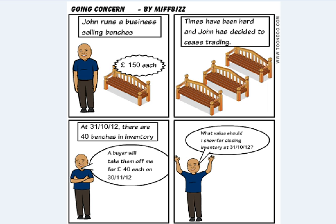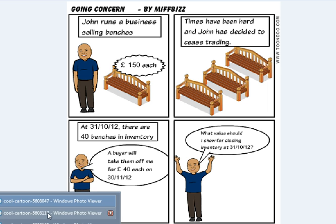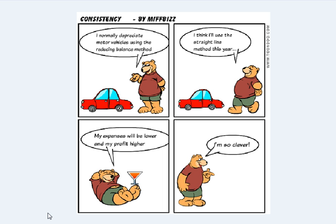Next one is consistency. We looked at this particular bear, where he normally depreciates using the reducing balance method, but then he thinks he'll swap to using the straight line method, because ultimately it will give him lower expenses and a higher profit.